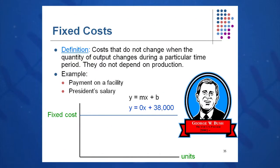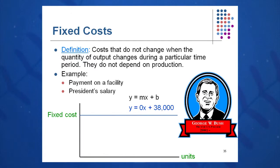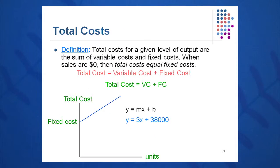Fixed costs are a little bit different — they don't change regardless of output. So if I make one unit or 10,000 or 50,000 units, it really doesn't matter; I'm still going to pay the president the same amount, or pay the same rent — in this case $38,000. This curve takes the form Y equals zero X plus 38,000, with a zero slope and Y-intercept of 38,000. We can add variable cost plus fixed cost to get a total cost curve: Y equals 3X plus 38,000.